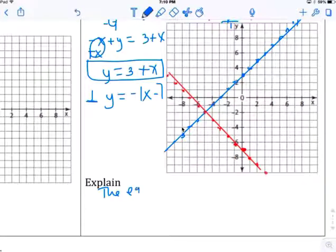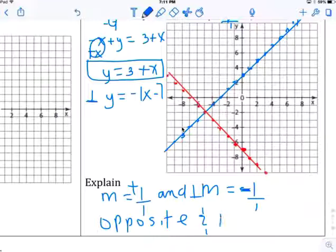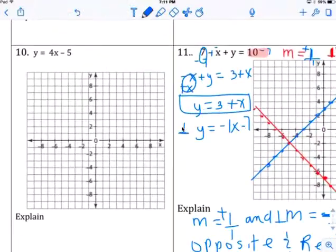The equation, well, I'll just explain. We'll just put slope equals to one. And the perpendicular line slope is equal to negative one over one. It's opposite. That's a plus, and that's a negative. It's opposite. Opposite and reciprocal. That means it's flipped. Okay, opposite and reciprocal.